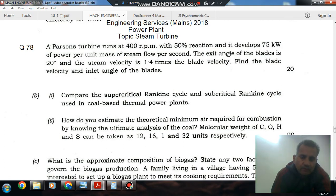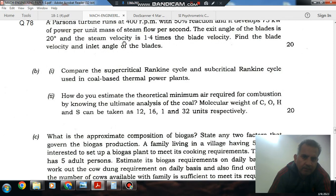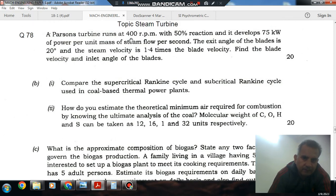Hello, welcome again. We are solving conventional questions on power plant steam turbines. Question number 78 from India 2018: A Parsons turbine runs at 400 RPM with 50% reaction and develops 75 kilowatts of power per unit mass of steam flow per second. The exit angle of the blade is 20 degrees and the steam velocity is 1.4 times the blade velocity.